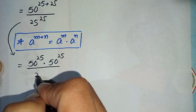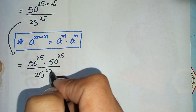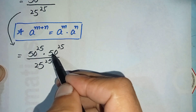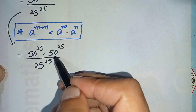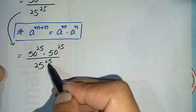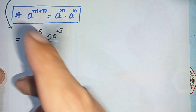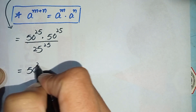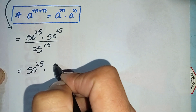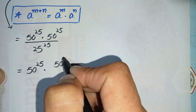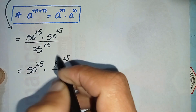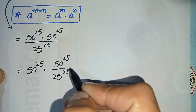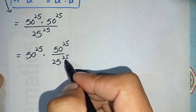Divided by 25 raised to power 25. Notice that this 25 and this 50 have the same powers, so we will split these two numbers. We can write this as 50 raised to power 25 times 50 raised to power 25, divided by 25 raised to power 25.